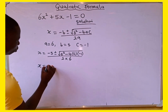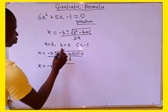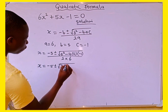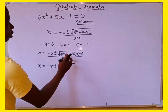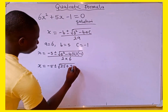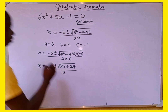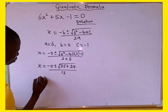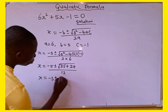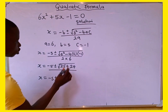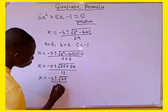X equals negative 5 plus or minus the square root of 5 squared, which is 25. Then negative multiplied by negative gives us plus, and 4 multiplied by 6 gives us 24, all divided by 2 multiplied by 6 which is 12. So x equals negative 5 plus or minus the square root of 25 plus 24, which gives us 49, all over 12.